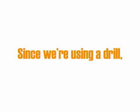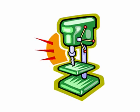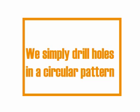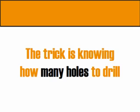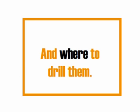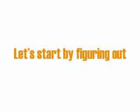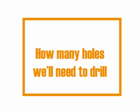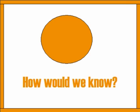Since we're using a drill, the smart thing to do would be to simply drill the holes in a circular pattern. That's exactly what we want to do. The trick is two-part: it's knowing how many holes to drill, and it's knowing where to drill them. So let's start by figuring out how many holes we'll need to drill for our three-inch diameter circle.